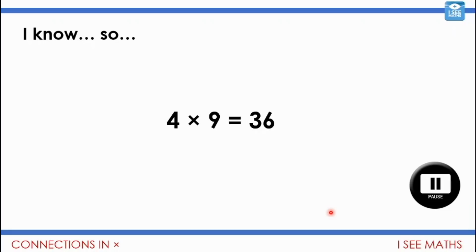So now pause the video and I want as many different number facts that you can work out from four times nine equals 36. So see if you can write down some different calculations that link to that one. Maybe some extra lots of four or not as many fours or some more nines or not as many nines, or maybe we can try doubling and halving. Have a go, see what you can find.